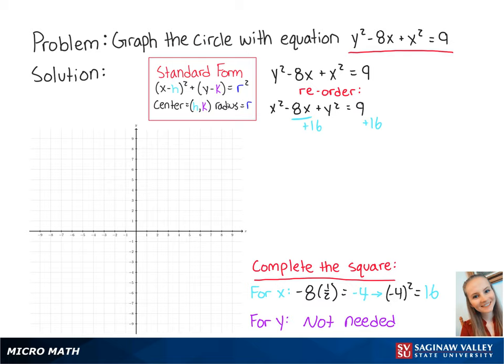So completing the square for x, our equation becomes x minus 4 squared plus y squared equals 25. To put the equation into standard form, we can rewrite y squared as y minus 0 squared.